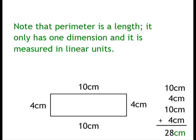Now a perimeter is a length. It only has one dimension and it is measured in linear units, in this case centimeters.